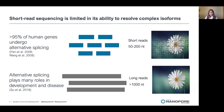Considering over 95% of human genes undergo alternative splicing, and changes in splicing lead to disease or reveal important information about development, it's important that we're able to study all the unique isoforms that arise from single genes. Short read sequencing such as Illumina is limited in its ability to resolve these spliced isoforms due to the requirement of fragmenting RNA prior to sequencing.